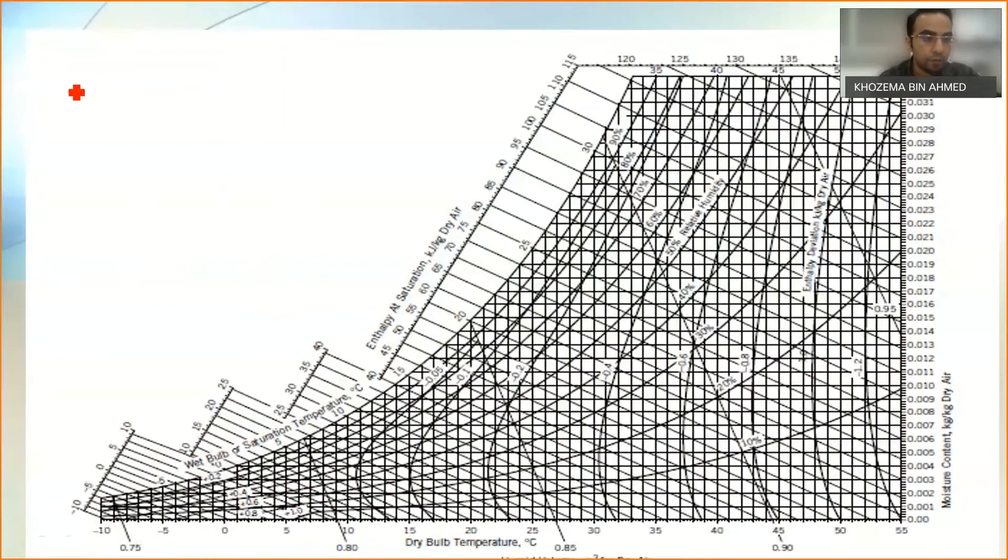From there I can find that my value of humidity at the point of intersection between 35 percent relative humidity and dry bulb temperature of 30 degrees Celsius, the humidity value is actually equal to 0.0093 kg H2O over kg dry air.